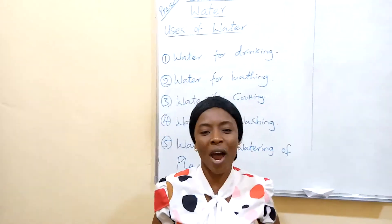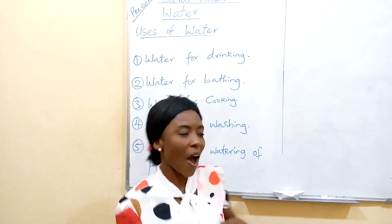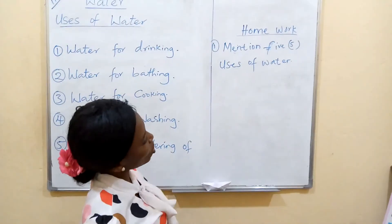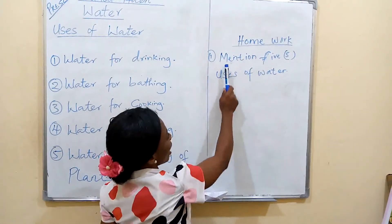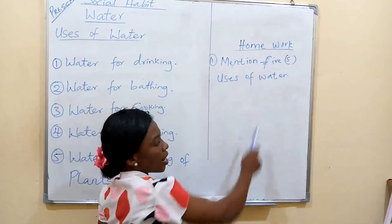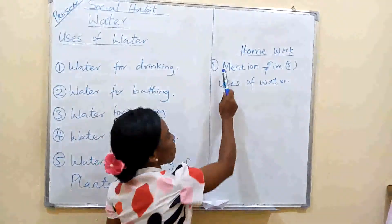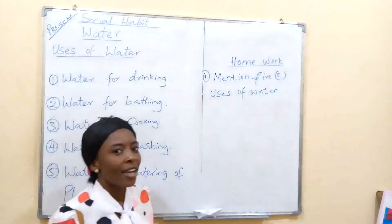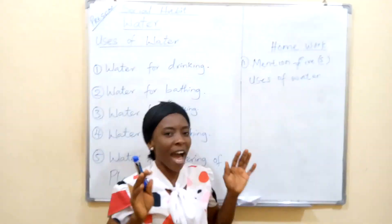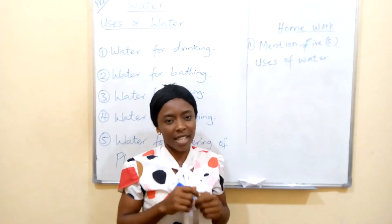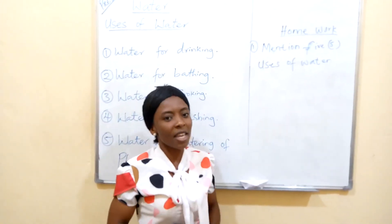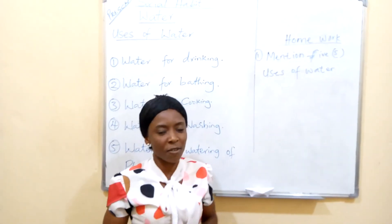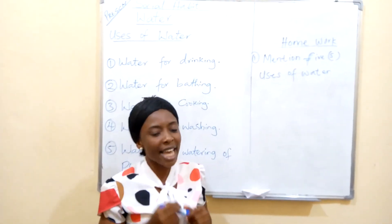That takes us to our short homework. Alright. Our homework says: mention five uses of water. So you can tell mommy five uses of water. You tell mommy, let me tell you the five uses of water, what we use water for. And that will be lovely.